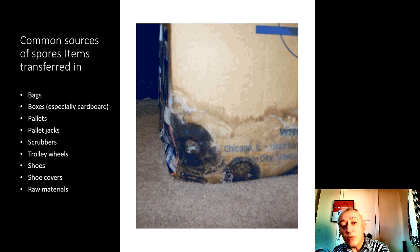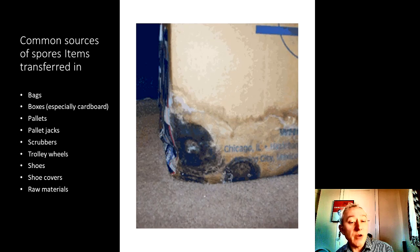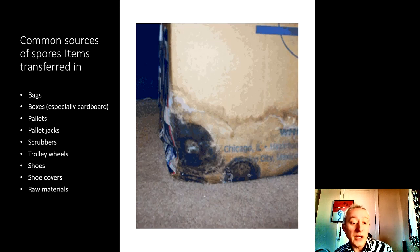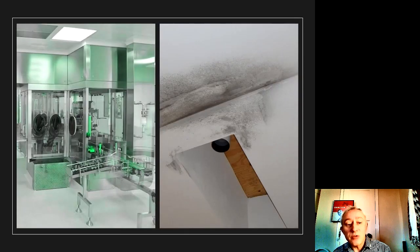In terms of where fungal spores come from, they're either part of the built environment or, in most cases, coming from outside. It's a similar theme to bacterial spores — things coming in that have been exposed to the environment. The importance of removing wrappings, wet items, and particularly cardboard is highlighted, as cardboard is a strong source of fungal spores and mold, so we don't want cardboard anywhere near the clean room.